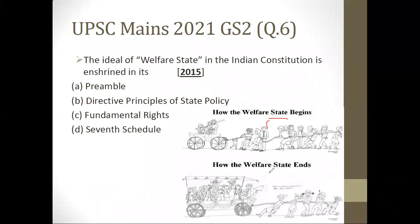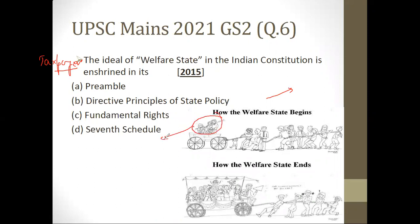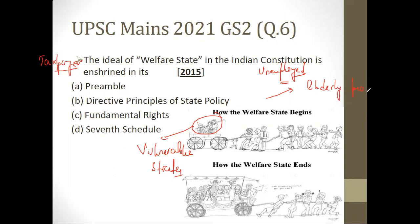Let's understand this diagram showing how the welfare state begins and ends. Taxpayers give their money as taxes — a certain portion is taken by the state as direct, indirect, and other taxes. Using these taxes, the government helps some vulnerable strata through subsidies and other means. The vulnerable strata includes the unemployed, elderly people, disabled people, and the young.